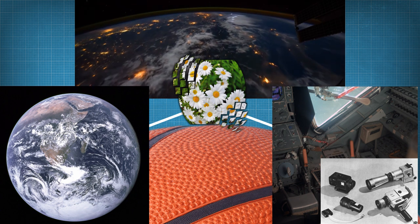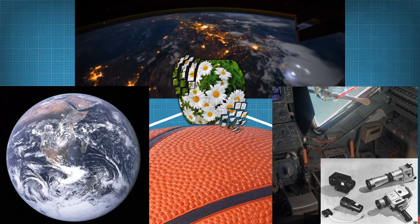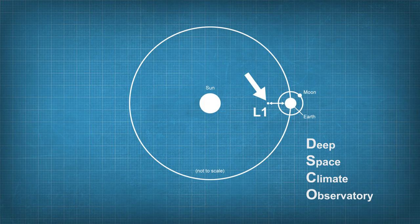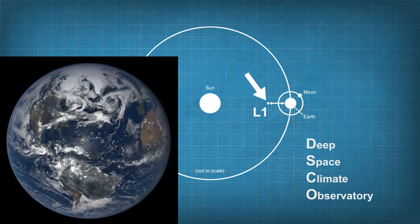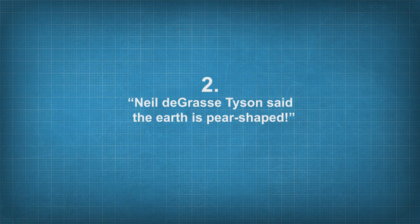Anyway, since 2015 we have a satellite positioned at the Lagrange L1 point, which is about 1.5 million kilometers away from Earth. It can take images of the whole Earth all the time without the need for stitching. The link is in the description. Neil deGrasse Tyson said the Earth is pear-shaped. Wikipedia says it's an oblate spheroid. On images it is round. What shape is it now?